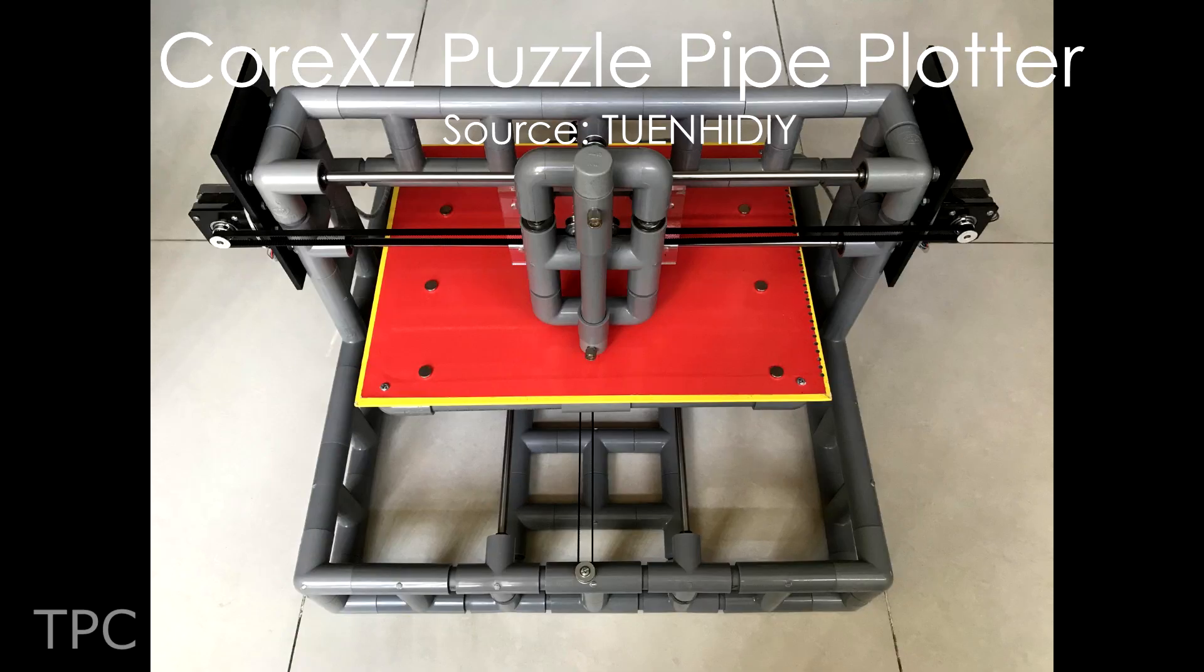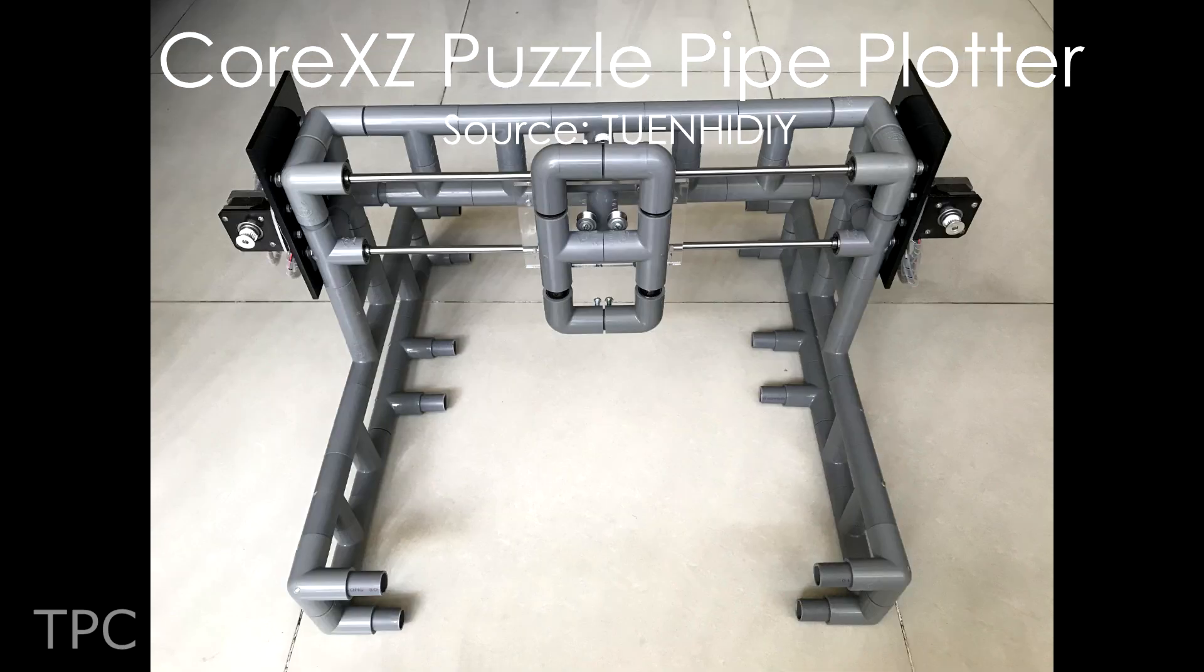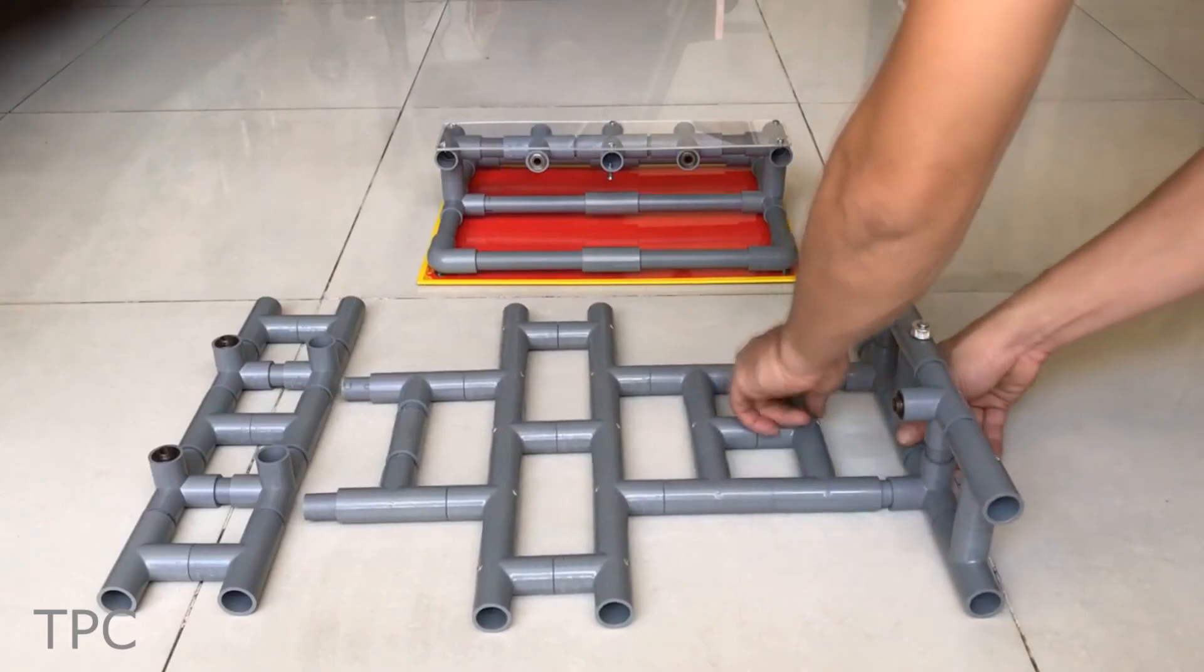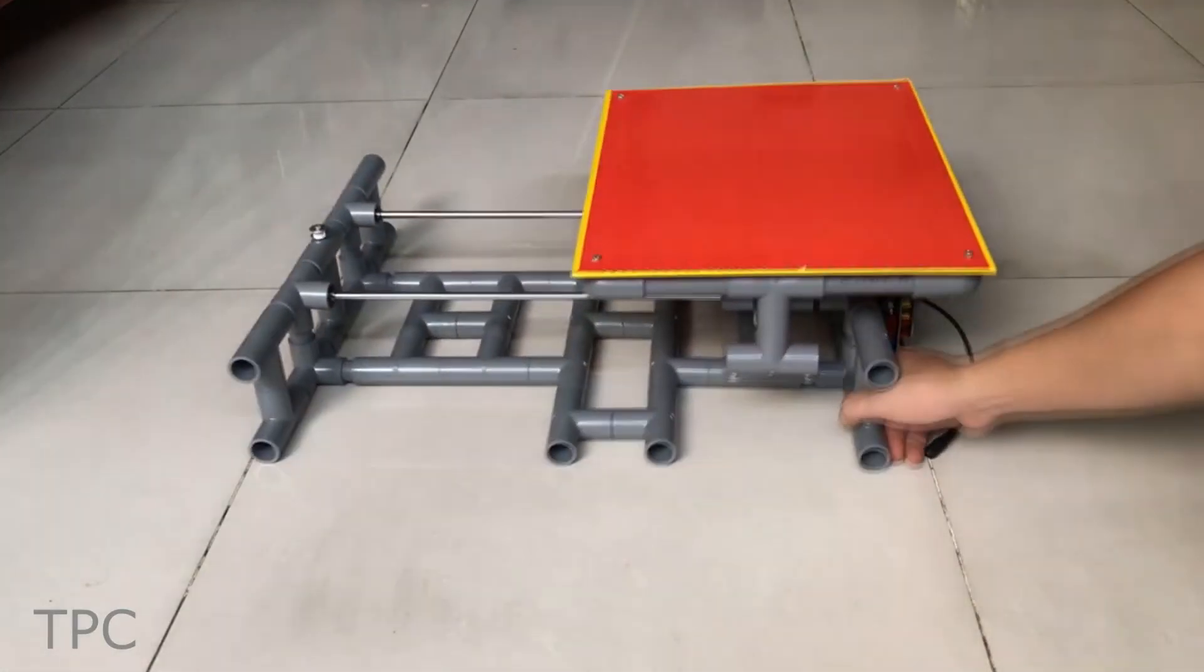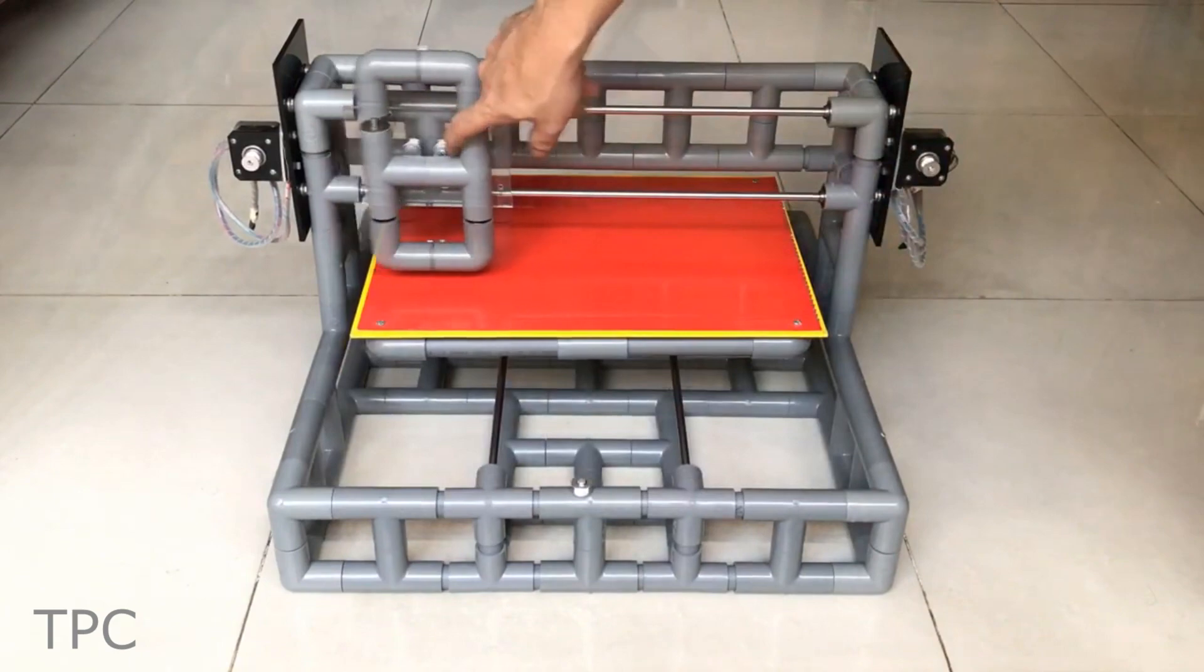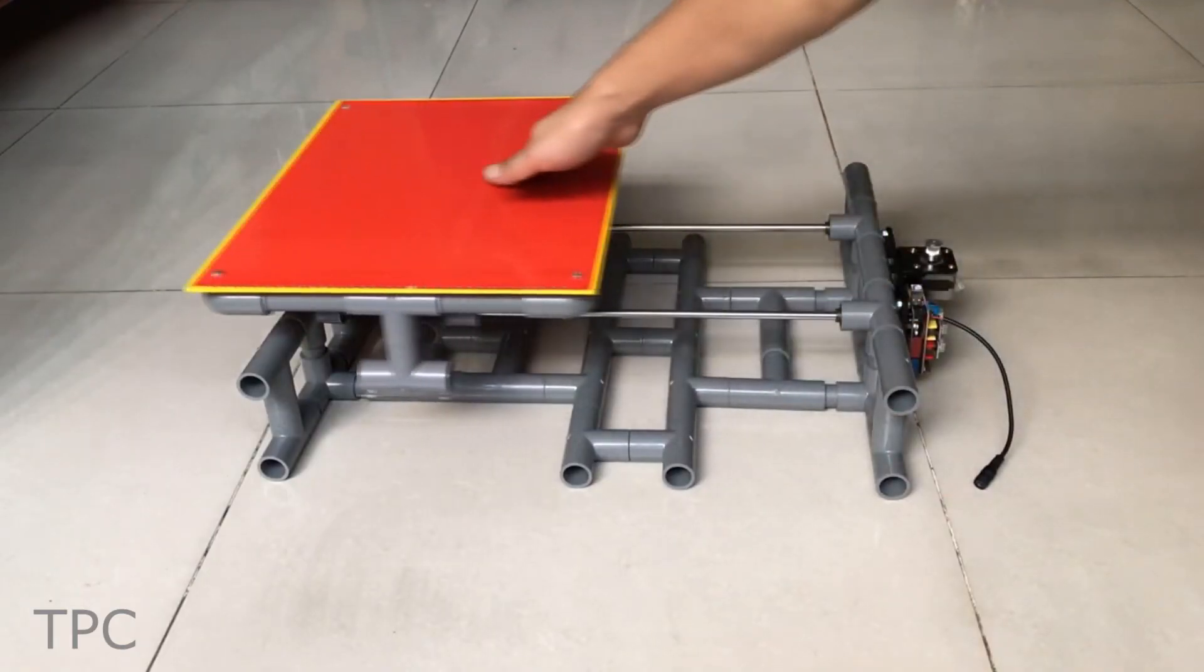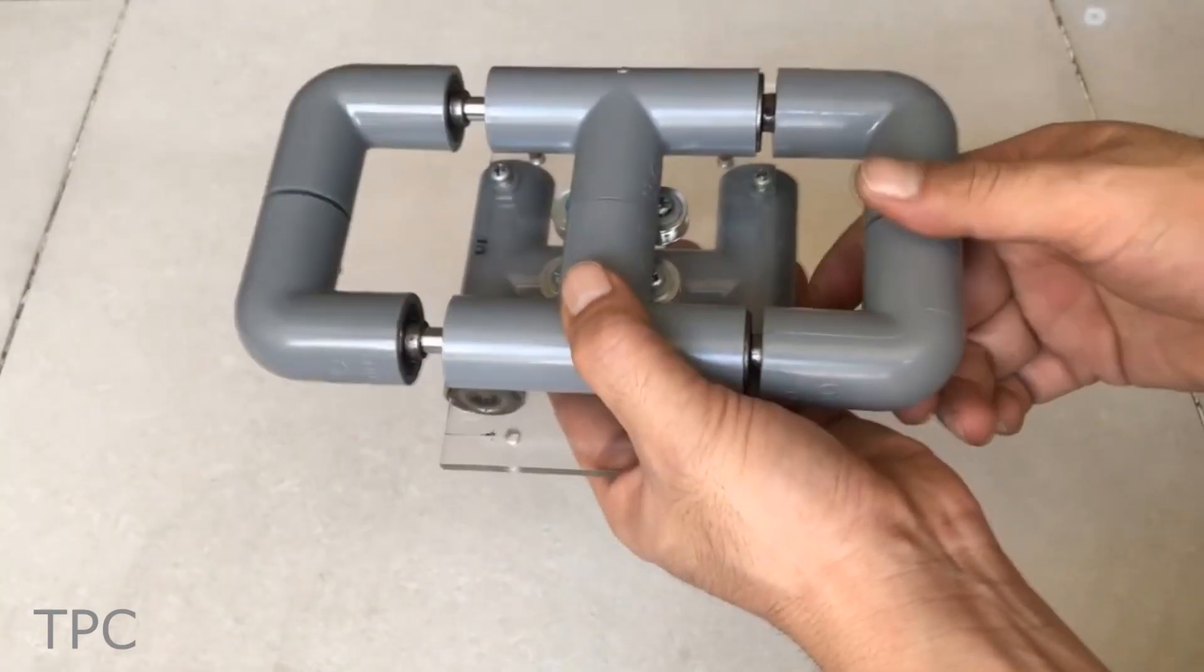This is a puzzle pipe CNC plotter. The frame of this plotter is built using PVC pipes. It is called puzzle pipe CNC because the pipes fit together in a logical way. The CNC has a working range of 380 mm on the X as well as the Y axis and 6 mm on the Z axis.